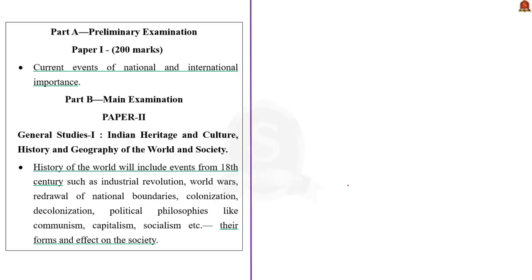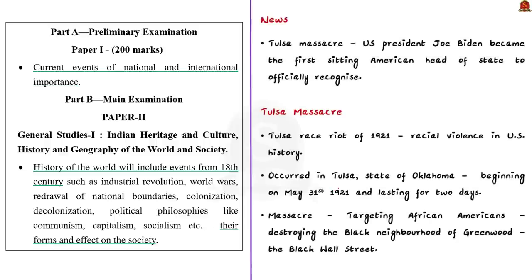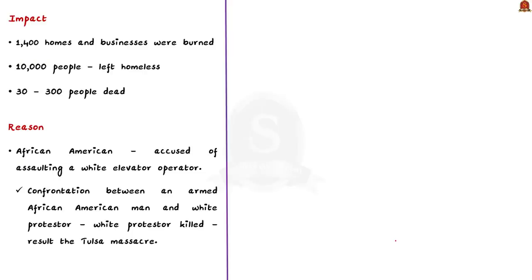The Tulsa Race Massacre of 1921, also called the Tulsa Race Riot of 1921, is one of the most severe incidents of racial violence in US history. It occurred in Tulsa, Oklahoma, beginning on May 31st 1921 and lasted two days. The massacre left between 30 and 300 people dead — mostly African Americans — destroying the prosperous Black neighborhood of Greenwood, known as Black Wall Street. More than 1,400 homes and businesses were burned and nearly 10,000 people were left homeless. Despite its severity, it was barely mentioned in history books until the late 1990s.